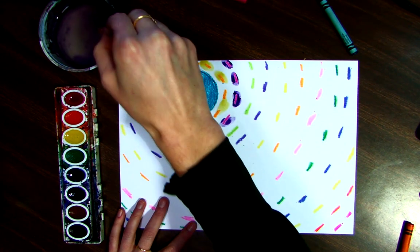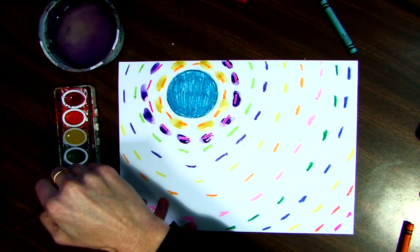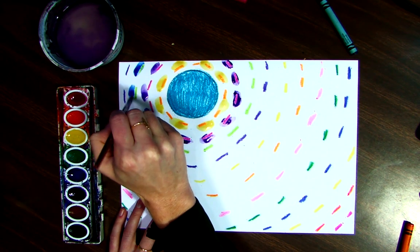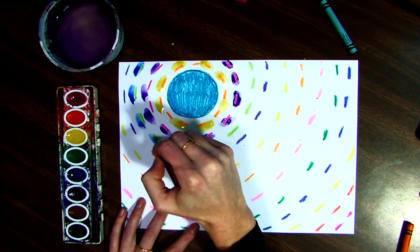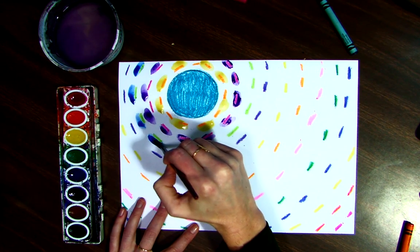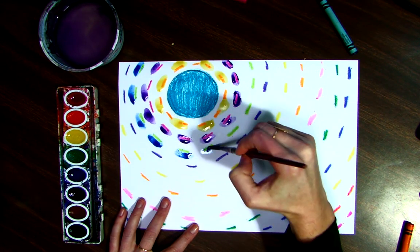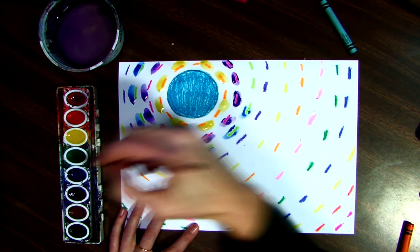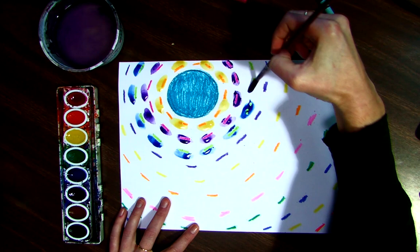You can keep switching up those colors as many times as you want. Every row around my circle, I change my color. And again, I'm trying not to do the same color that I used for my crayon. I'm trying to change it up.